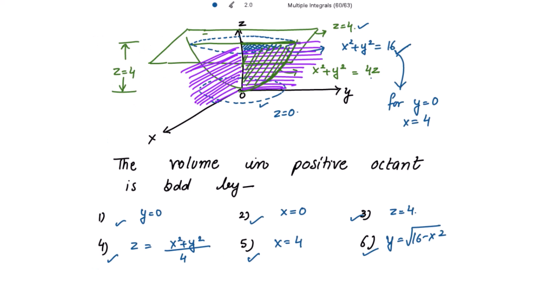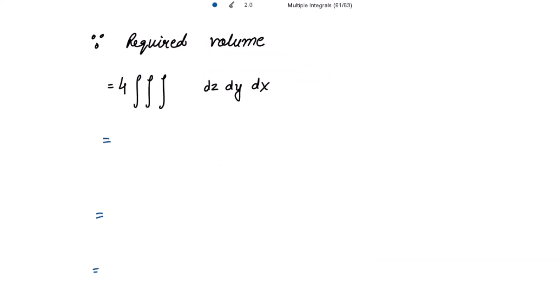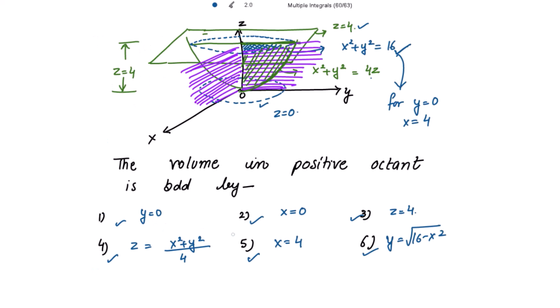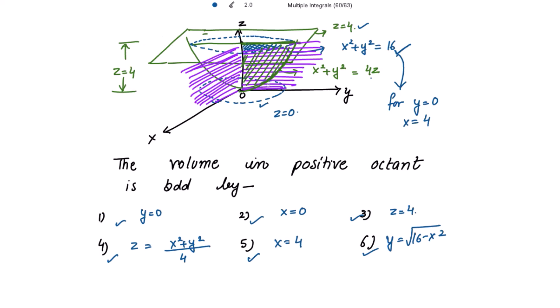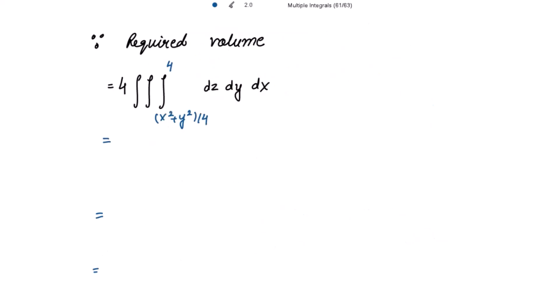Because the limits of z are in two variables, the innermost integral will be in z. The limits of y are in one variable, so the second integral is in y. And the limits for x are constant — 0 and 4 — so the outermost integral is in x. The limits of z go from the curved surface z = (x² + y²)/4 to the plane z = 4. Then the limits of y go from 0 to √(16 − x²).